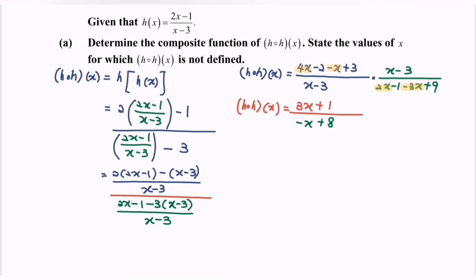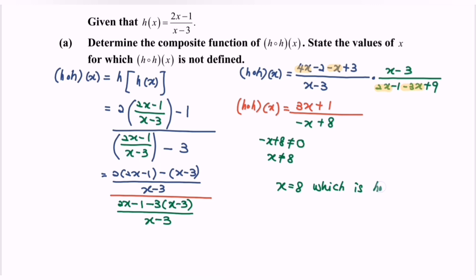Next, state the value of x for which h∘h is not defined. The denominator, negative x plus 8, cannot equal 0, so x cannot equal 8. Therefore x equals 8 is the value for which h∘h is not defined, because substituting 8 makes the denominator 0, and as we know, something divided by 0 is undefined.